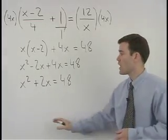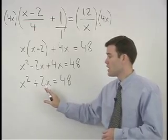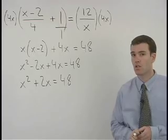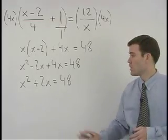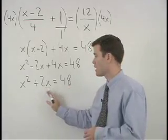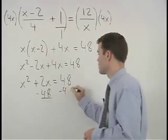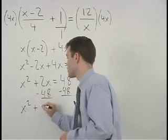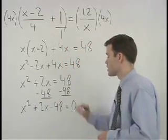Notice that our equation has an x squared term in it. In this situation, remember we must first set the equation equal to 0, then factor. So our next step is to move the 48 to the left side by subtracting 48 from both sides to get x squared plus 2x minus 48 equals 0.